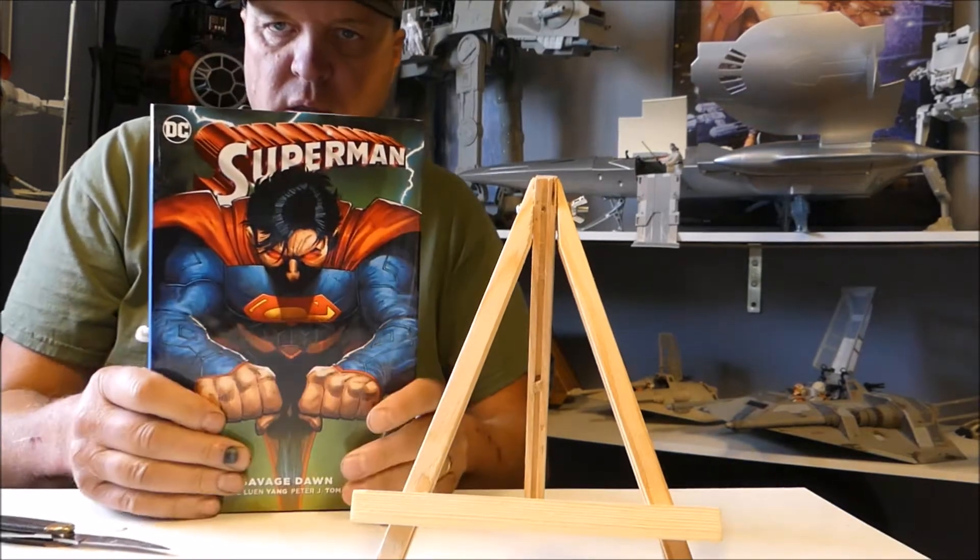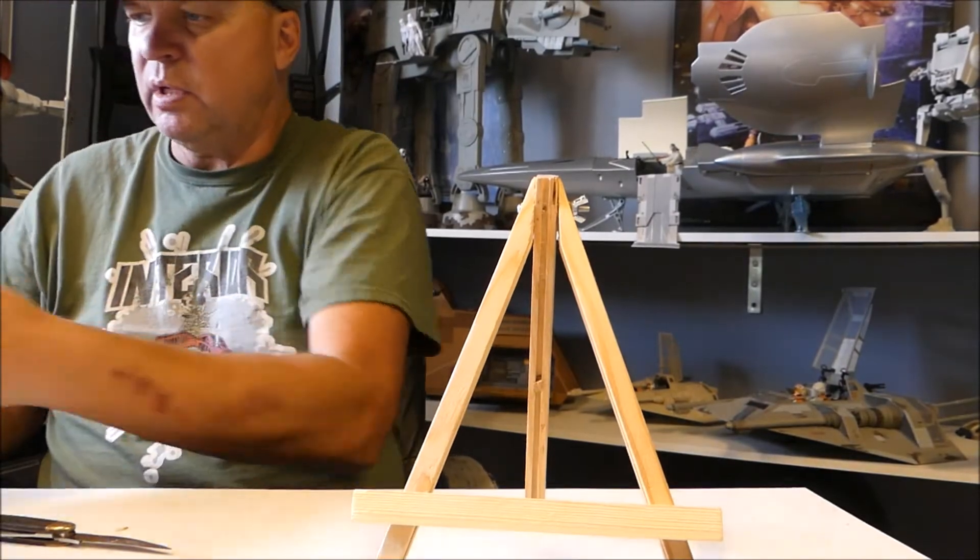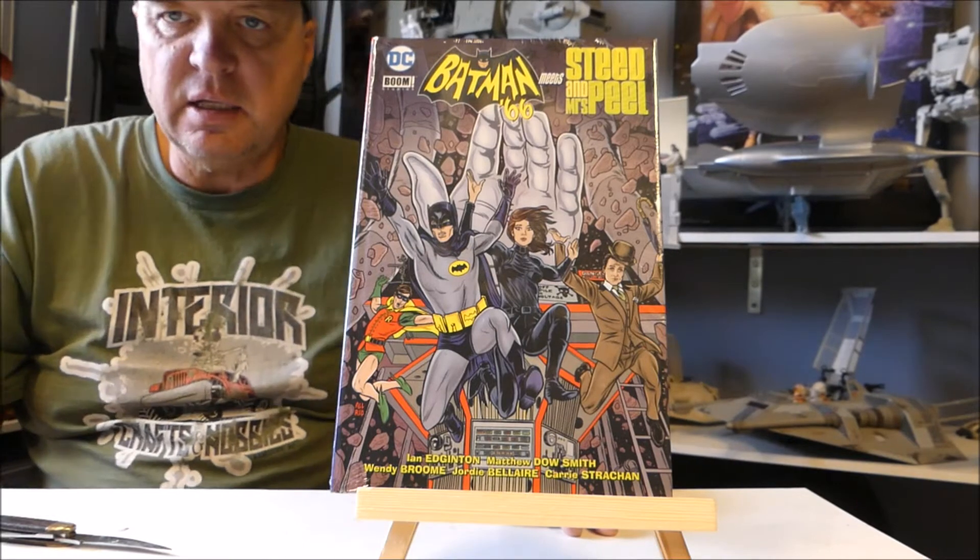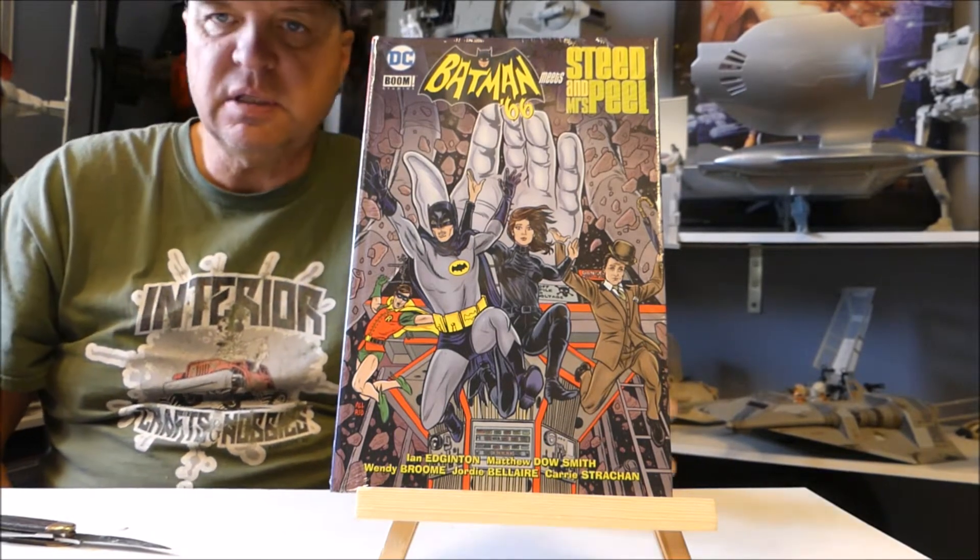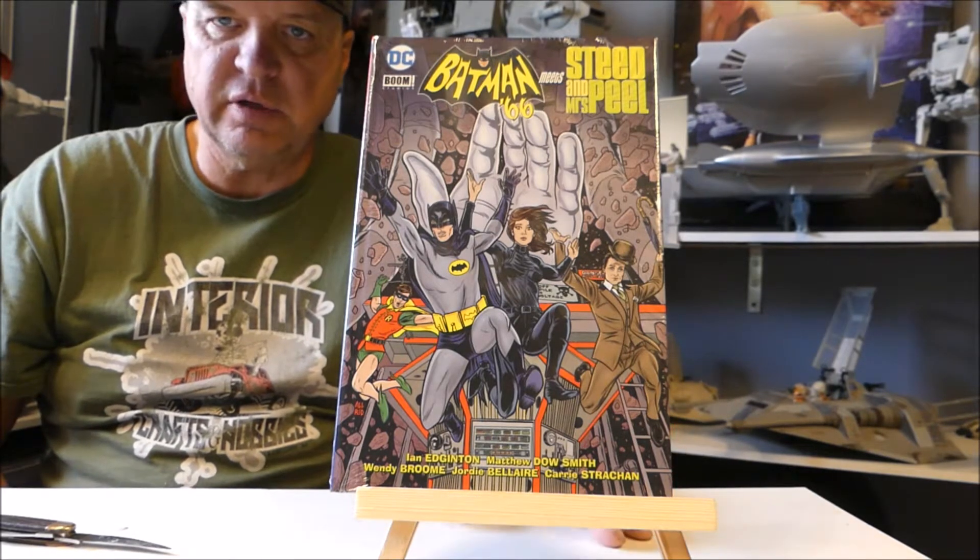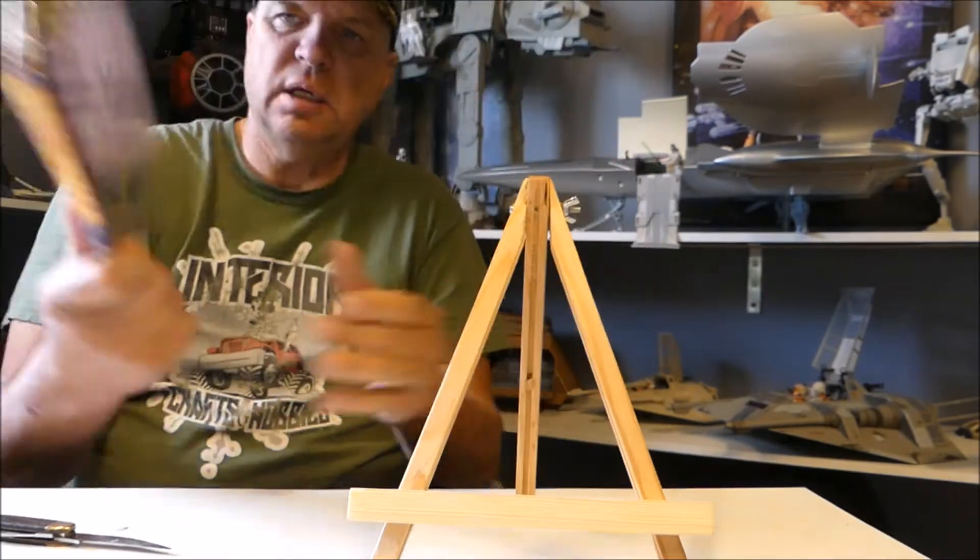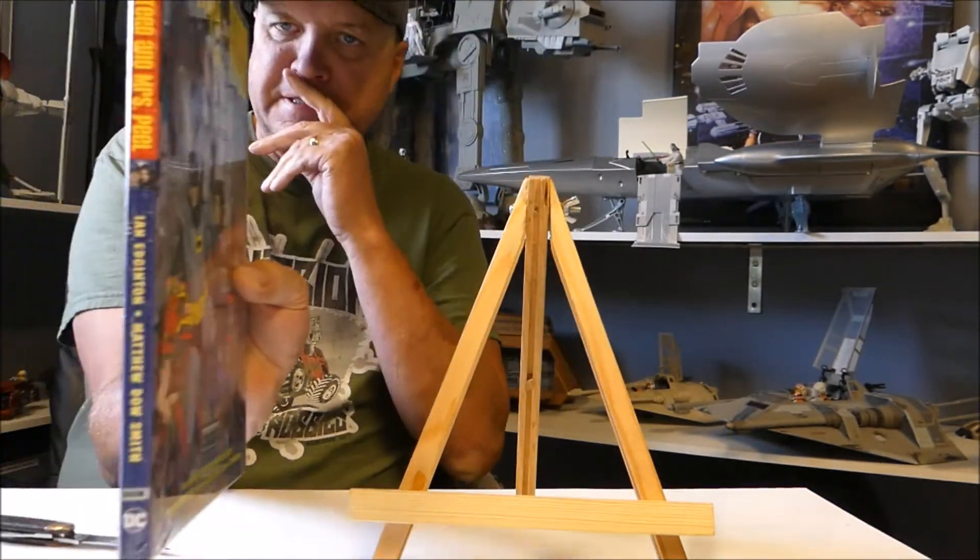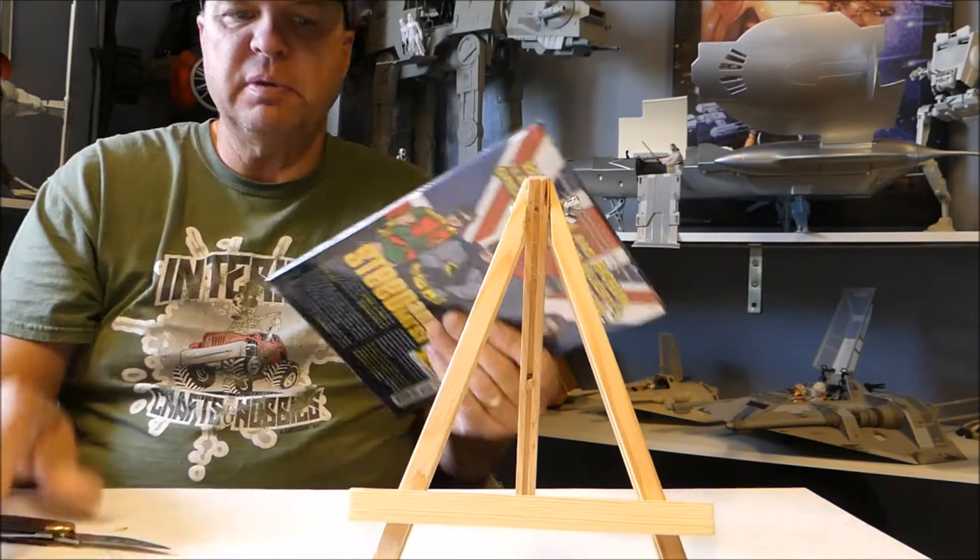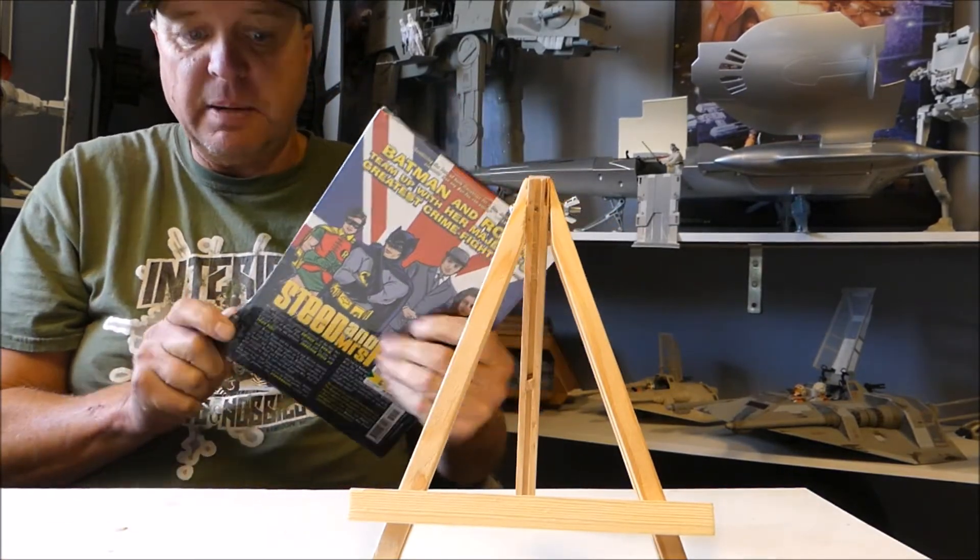Then this one really caught my eye, this one I really wanted when I saw it. This is Batman '66 and Emma Peel and Steed. Now Emma Peel and Steed, if you are not of my age, they were known as The Avengers in England. I noticed on this book they had to go with Batman, four dollars, that's how thick it is. They had to go with Batman meets Steed and Mrs. Peel.